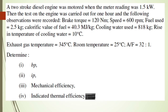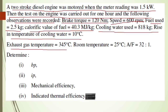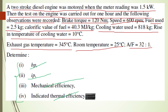Now a similar numerical: a two-stroke diesel engine was motored and the motoring meter reading was 1.5 kilowatt. The test was carried out for one hour with the following observations: brake torque is 120 Newton meter, speed is 600 RPM, fuel used is 2.5 kg, calorific value of fuel is 40.3 megajoule per kilogram, cooling water used is 818 kg with a temperature rise of 10 degrees, exhaust gas temperature is 345°, room temperature is 25°, and air-fuel ratio is 2.1. We have to find brake power, indicated power, mechanical efficiency, and indicated thermal efficiency.